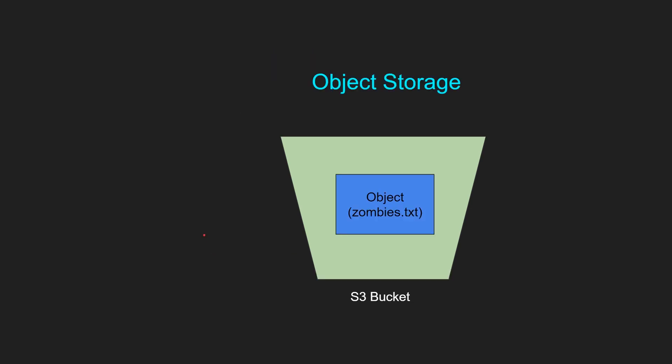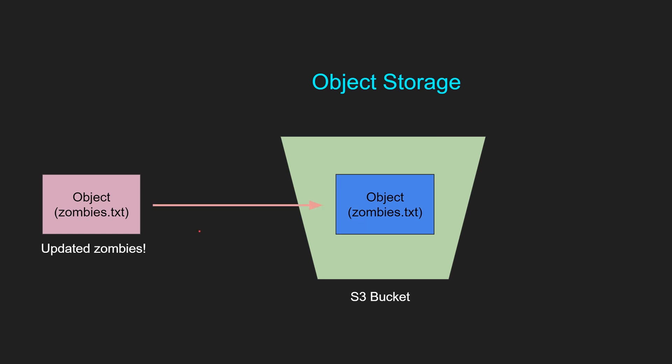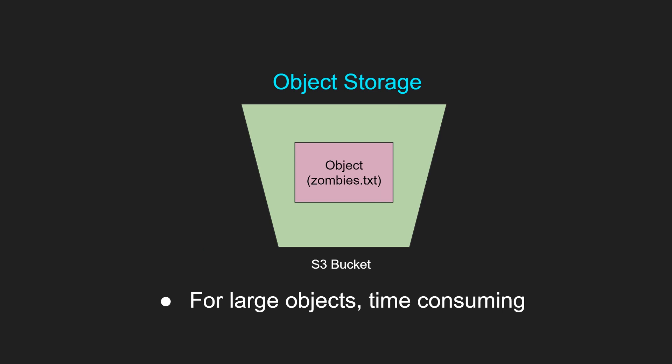Now let's say you want to update that book. The thing with object storage is the whole object needs to be replaced. So you change the book and you have to re-upload the whole zombies.text, and it gets uploaded into the S3 bucket. For large objects, it is time consuming and slower, because every time you have to upload a file or even download part of the file — let's say you want to read specifically about one zombie — instead of fetching one particular part, you have to download the whole zombies.text from S3.